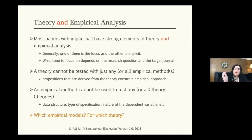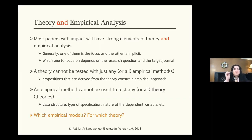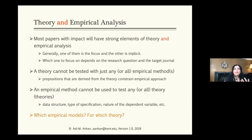I'd like to blur the divisions between the two perspectives. Most impactful papers with empirical work will have strong elements of theory, and most theoretical papers will have the discipline of empirical thinking. Of course, which one is emphasized depends on space — dissertations allow both, but in a journal paper, one will be at the forefront while the other remains implicit.